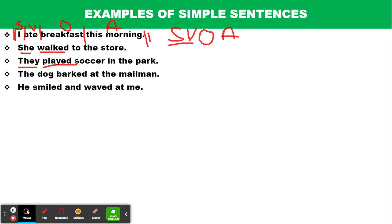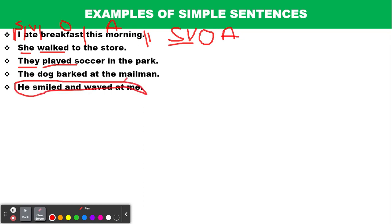'He smiled and waved at me' — this cannot be classified as a simple sentence because it contains two verbs: 'smiled' and 'waved.' This is actually a compound sentence. You can see from its characteristics that it has a different structure — two verbs: 'smiled' and 'waved.'